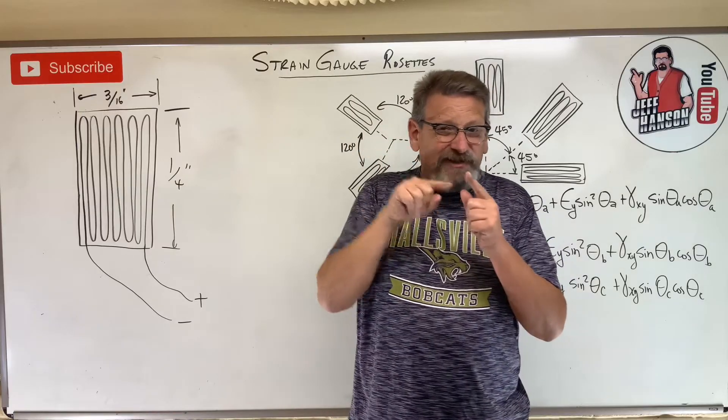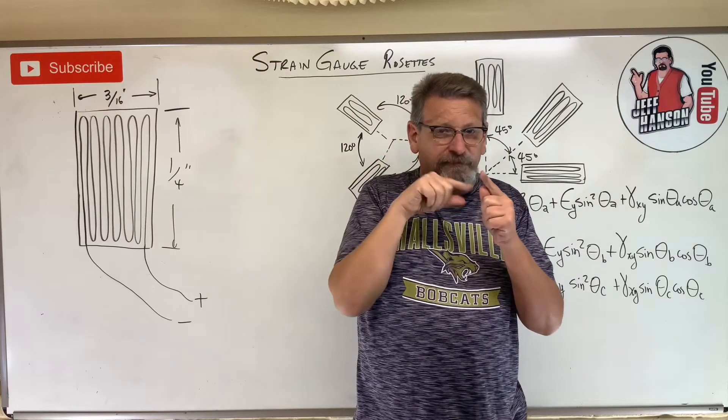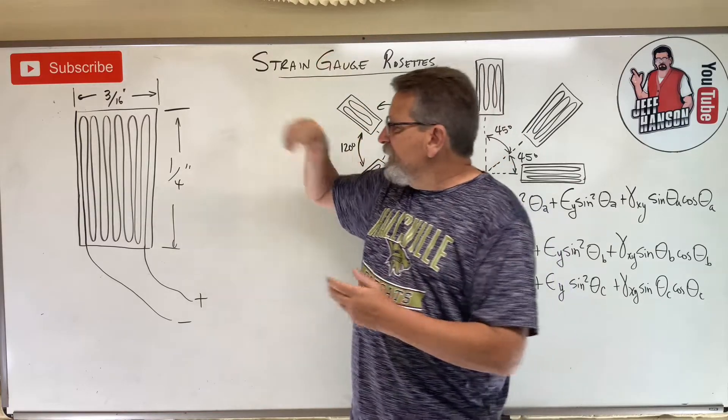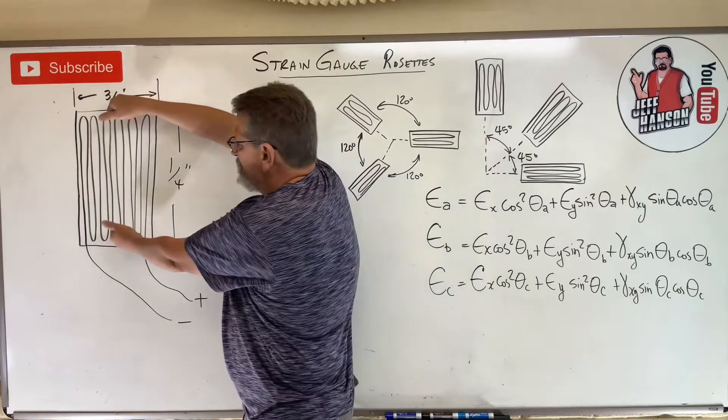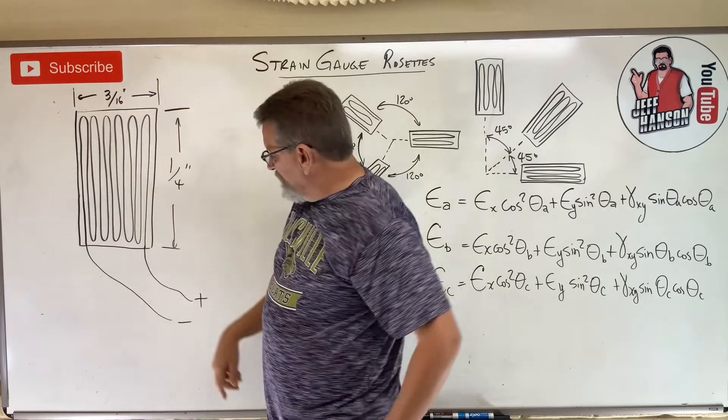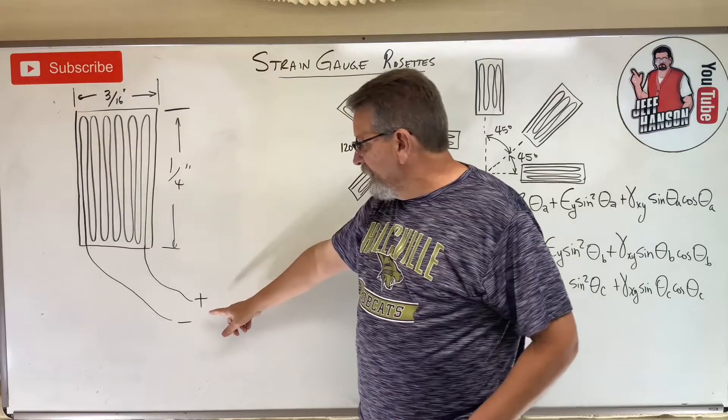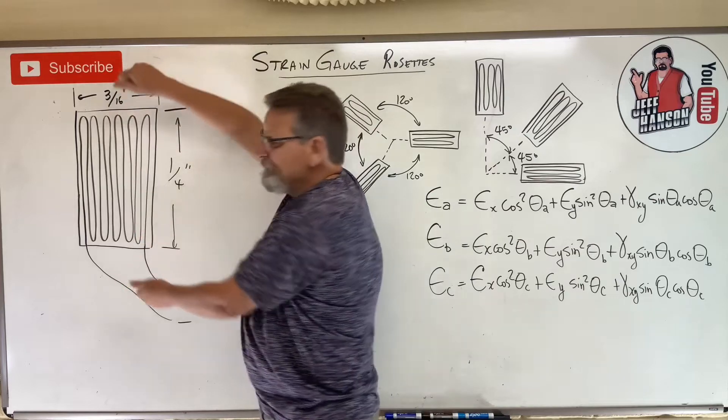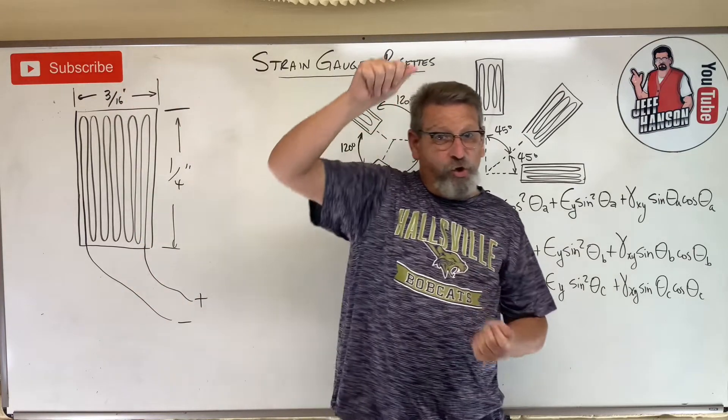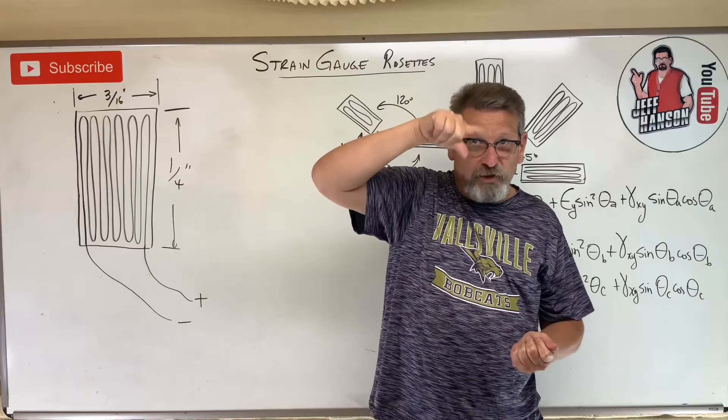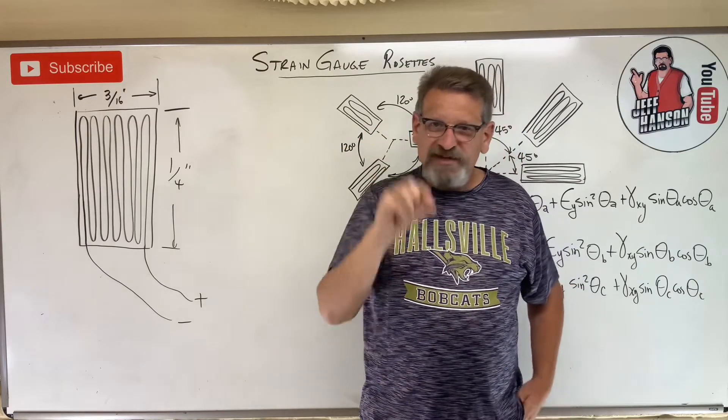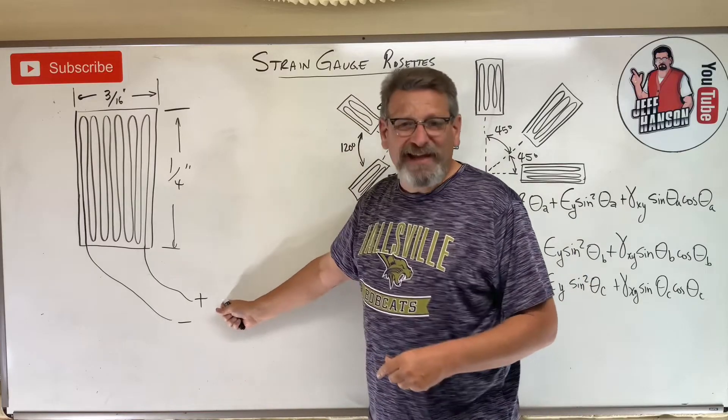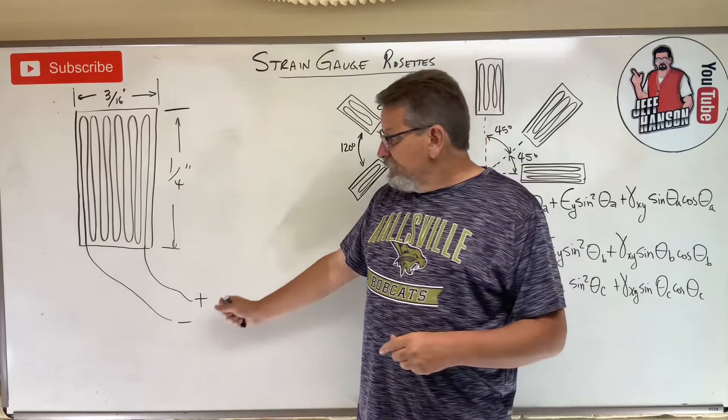Imagine if I took that back and forth pattern and I stretched it out, I might have a wire that long. Now if I take this gauge and I stretch it, I have a measurement across here - I'm reading resistance across that. When I stretch that, I'm essentially stretching that whole long skinny wire. It just happens to be all back and forth on one tiny little piece there. What I can do is I can relate that change in resistance to a change in length. That's what a strain gauge is.